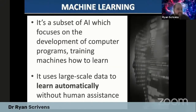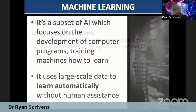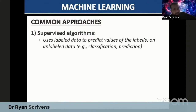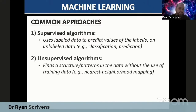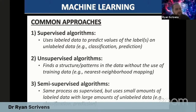Machine learning is a subset of AI which focuses on the development of computer programs, essentially training machines how to learn, using large-scale data to learn automatically without human assistance. There are three common approaches: supervised algorithms, which use labeled data to predict values on unlabeled data; unsupervised algorithms, which find structures or patterns in data without training data, such as nearest neighborhood mapping; and semi-supervised algorithms, which use small amounts of labeled data with large amounts of unlabeled data — the approach I'm most familiar with and would suggest considering.